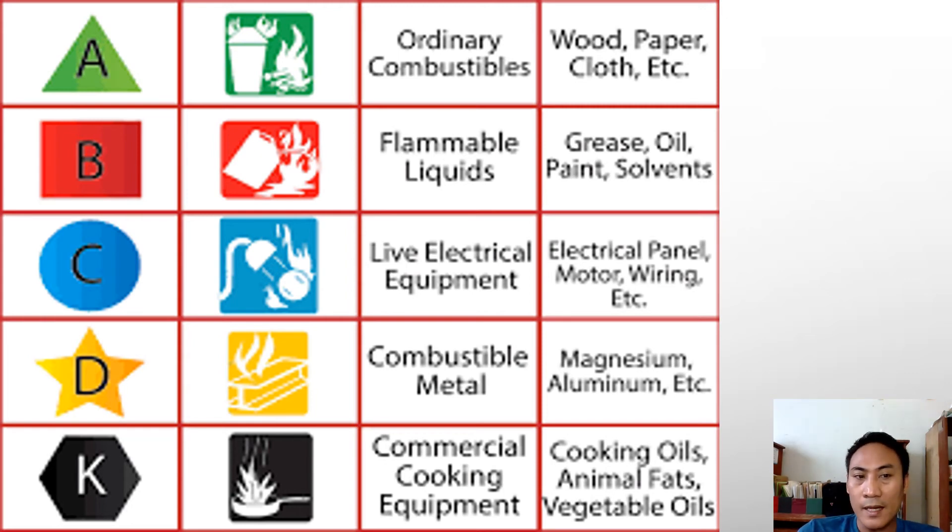Class B is flammable liquids such as grease, oil, paint, solvent, and gasoline. Class C is fire caused by live electrical equipment - electrical panel, motor, wiring. As long as there is the intervention of electricity, it will fall under letter C.